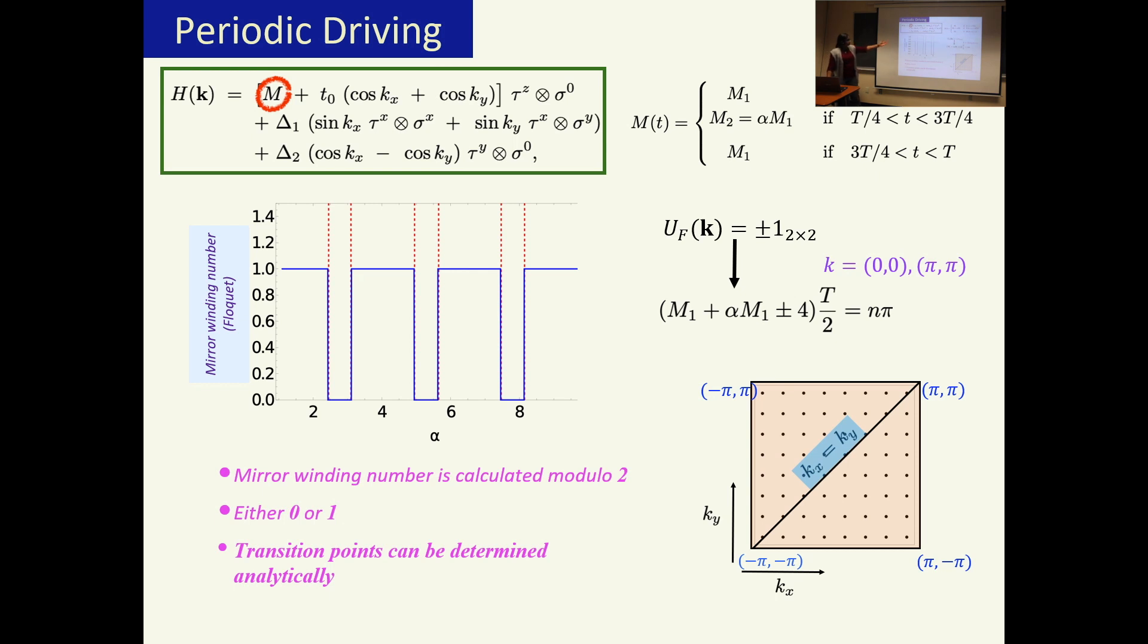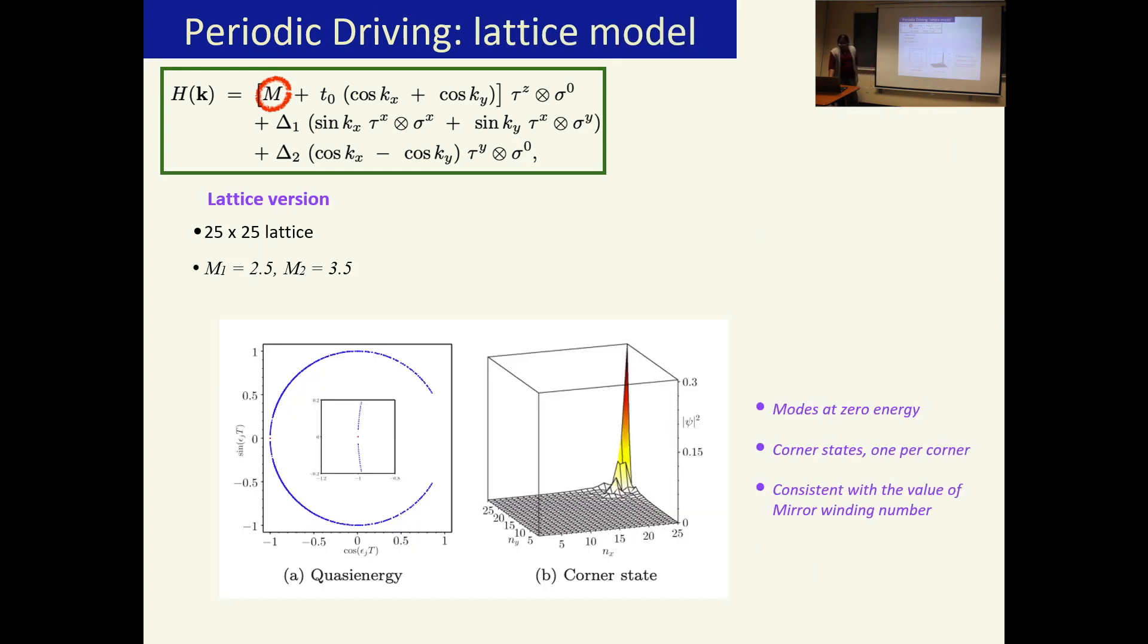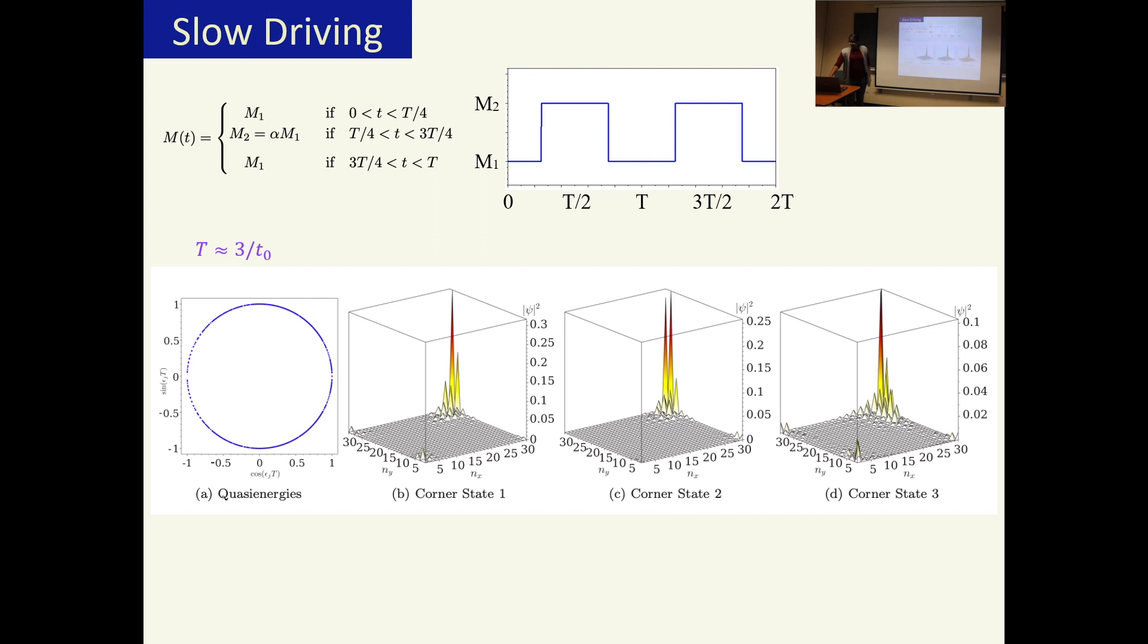Those results clearly match. We do the same driving on the lattice model and we take a finite lattice having 25 by 25 sites and we vary the mass term as I explained before. We see that exactly in the regions where the mirror winding number was one, that is non-zero, we find corner states, and there is one corner state per corner. This is clearly consistent, so the number of corner modes is consistent with the mirror winding number that we found.